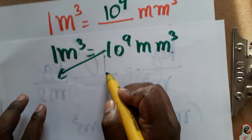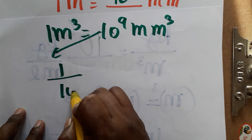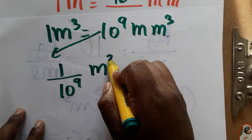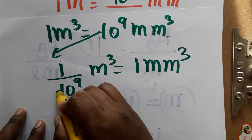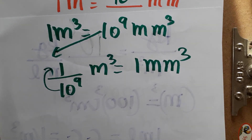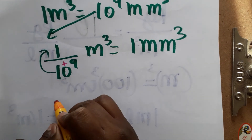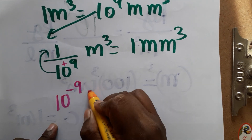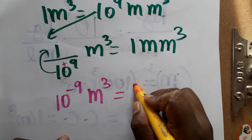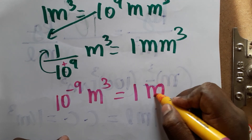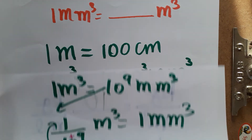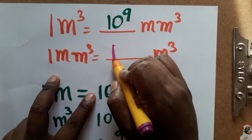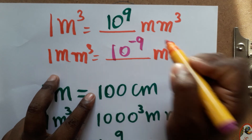Since we are finding the opposite, we bring 10 power 9 to the denominator: 1 divided by 10 power 9 meter cube equals 1 millimeter cube. Moving 10 power 9 from the denominator to the numerator changes the sign, giving 10 power minus 9. So, 1 millimeter cube is equal to 10 power minus 9 meter cube.